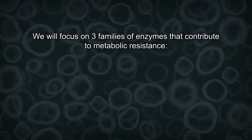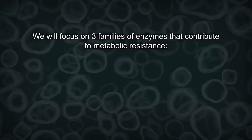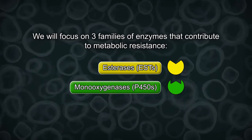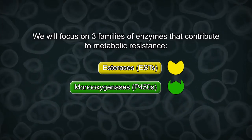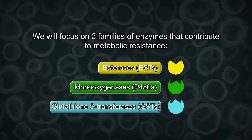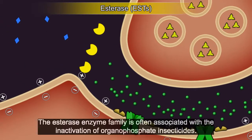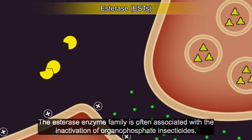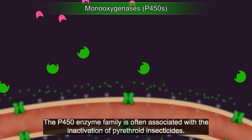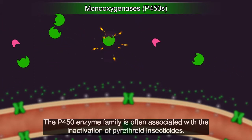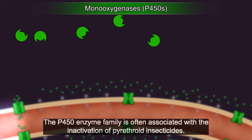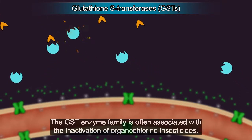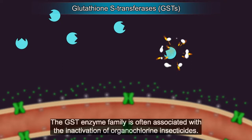We will focus on three families of enzymes that contribute to metabolic resistance. The esterase enzyme family is often associated with the inactivation of organophosphate insecticides. The P450 enzyme family is often associated with the inactivation of pyrethroid insecticides. The GST enzyme family is often associated with the inactivation of organochlorine insecticides.